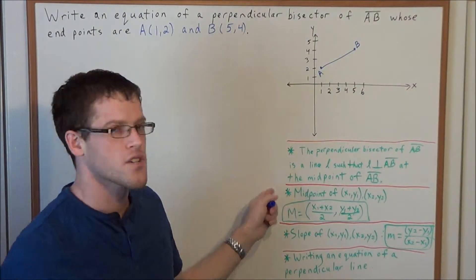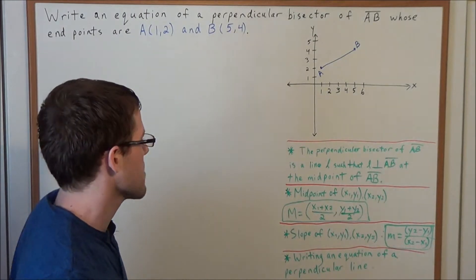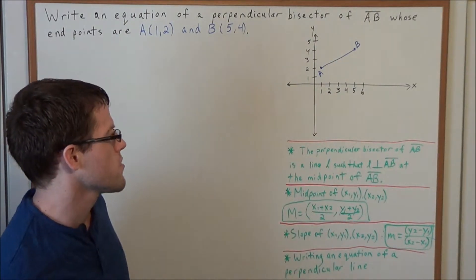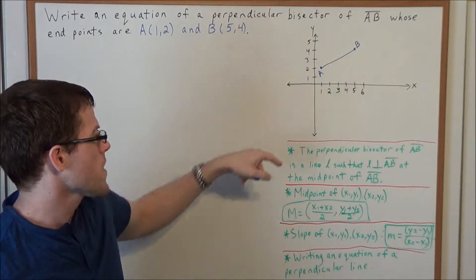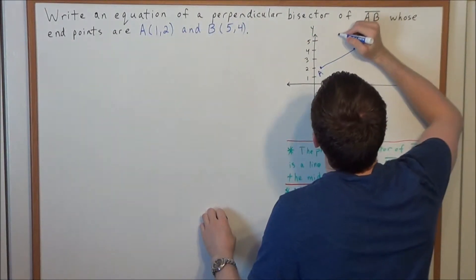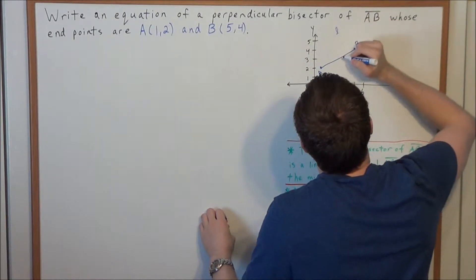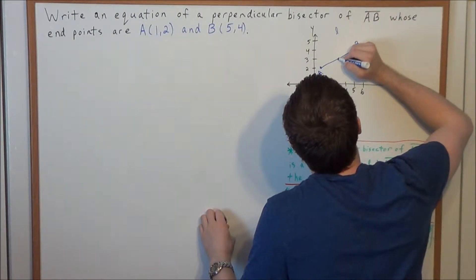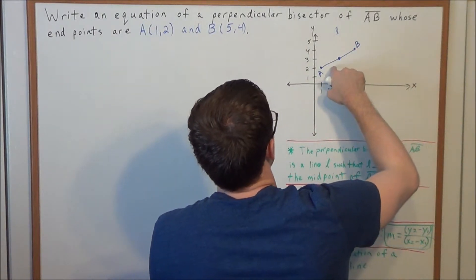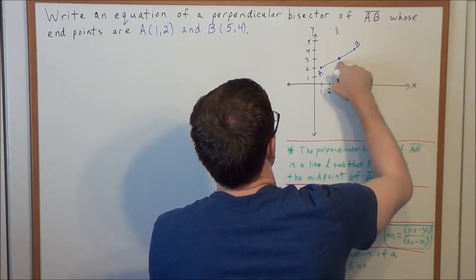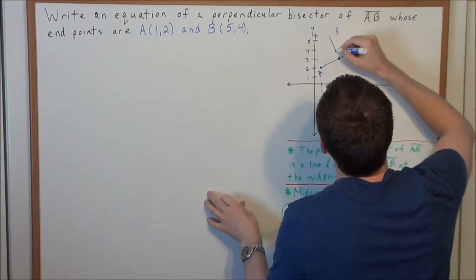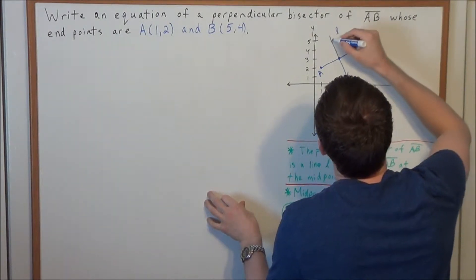So we need the following definition. The perpendicular bisector of line segment AB is a line L such that L is perpendicular to line segment AB at the midpoint of line segment AB. When we sketch line L, it's going to pass through the midpoint, separating line segment AB into two equal halves, and when it intersects line segment AB it's going to form a 90-degree angle.